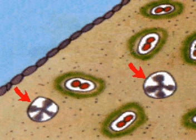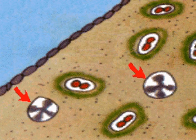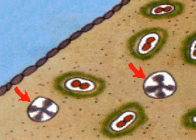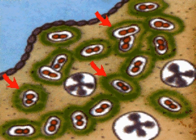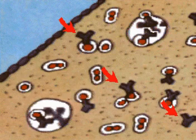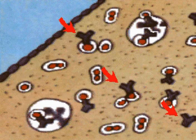White blood cells are attracted to an infected site where bacteria are multiplying and causing inflammation. Some bacteria have thick capsules around them, which prevents them from being engulfed. Consequently, the bacteria increase. The body then manufactures antibodies, which attach themselves to the bacteria, making them vulnerable to ingestion by the white cells.